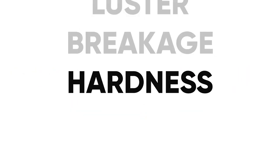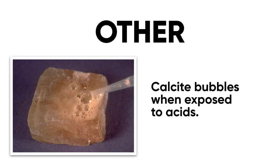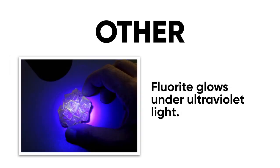Finally, we have a category of other characteristics. Certain minerals react when exposed to acid — like calcite, for example, which will fizz up and bubble when you put weak acid on it. Dolomite does the same thing, but only when it's powdered. Some minerals will glow under ultraviolet light, like fluorite, which gives a very impressive fluorescent glow when you shine a UV light on it.